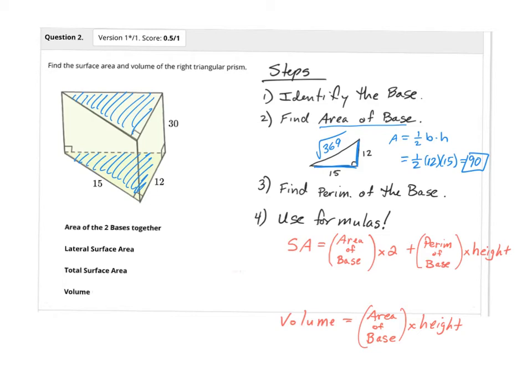Now we need to figure out the surface area and volume using these formulas. The surface area formula says to find the area of your base, which is 90, take that times 2, plus the perimeter of your base.